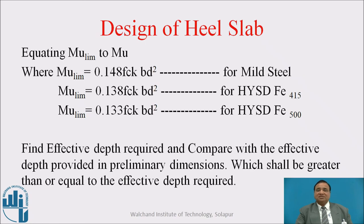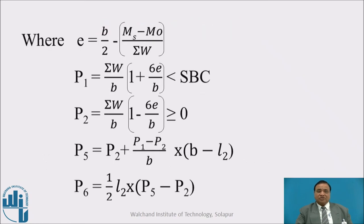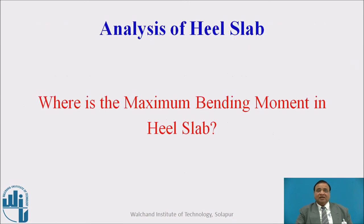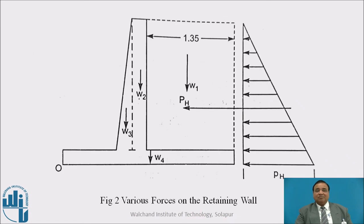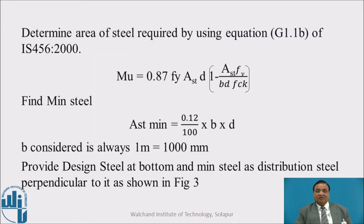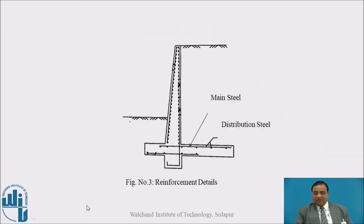This is how we design the cantilever portion of a heel slab. The specialty of a cantilever retaining wall is that each slab is a cantilever: the stem slab is a cantilever, the toe slab is a cantilever, and the heel slab is also a cantilever. The reinforcement arrangement in the heel slab runs from the face of the stem to the free end. The main reinforcement is at the top, with distribution steel below it. The main reinforcement should have the required development length extending into the stem slab.